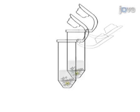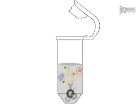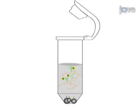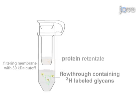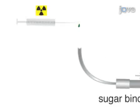Next, the samples are lysed, and a glycoprotein of interest is immunopurified, denatured, and its glycans are enzymatically released. The oligosaccharides are further purified by molecular filtration, which separates them from the proteins and other contaminants larger than 30 kilodaltons.